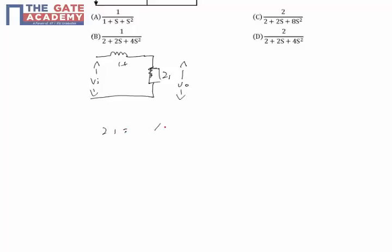So it is 1 by Cs into R by R plus 1 by Cs. That is equal to R by RCs plus 1. V0 by Vi is equal to R by RCs plus 1 by R by RCs plus 1 plus whatever is the impedance of the inductor.